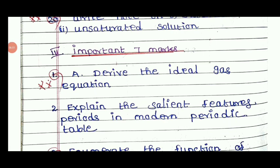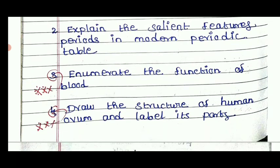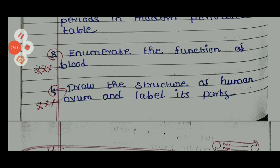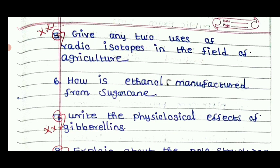Derive the ideal gas equation. Explain the salient features of the modern periodic table. What is the function of blood? Blood is an important 7-mark and 4-mark topic. Draw the structure of human ovum and label the parts — that is 7 marks. Give any uses of radioisotopes in the field of agriculture. Radioisotopes — how we use them in agriculture.